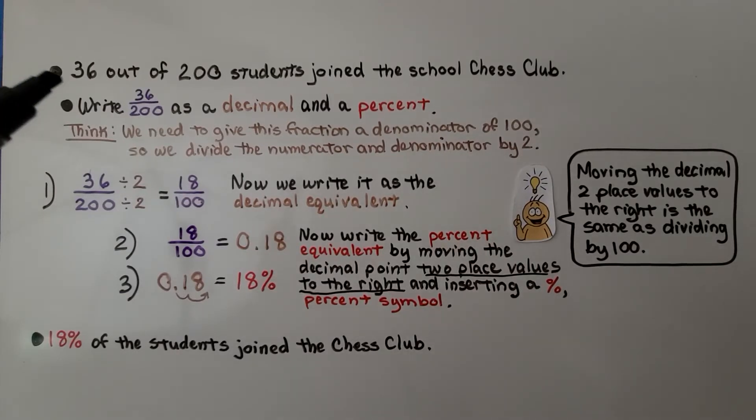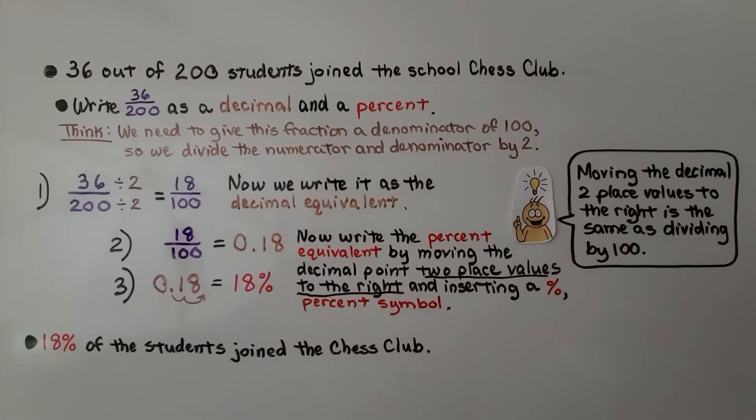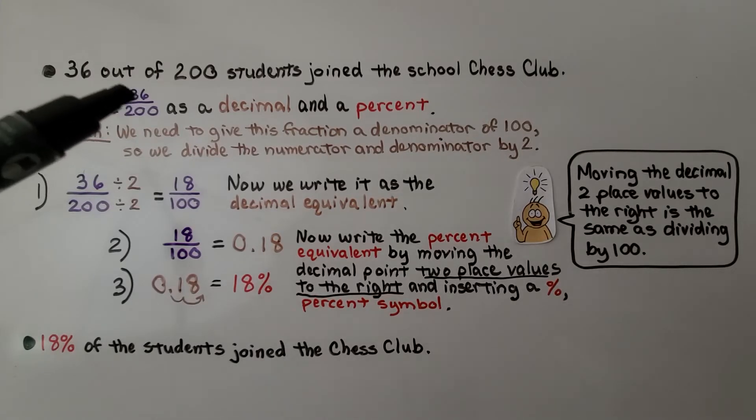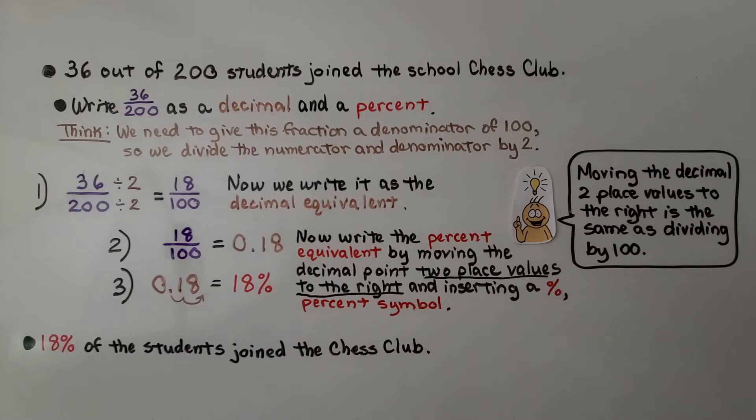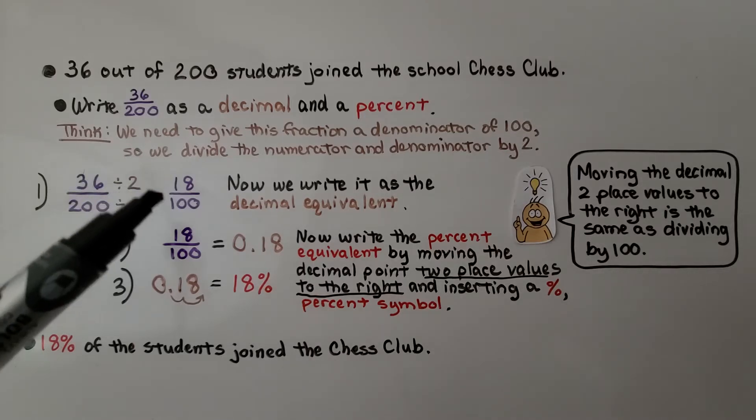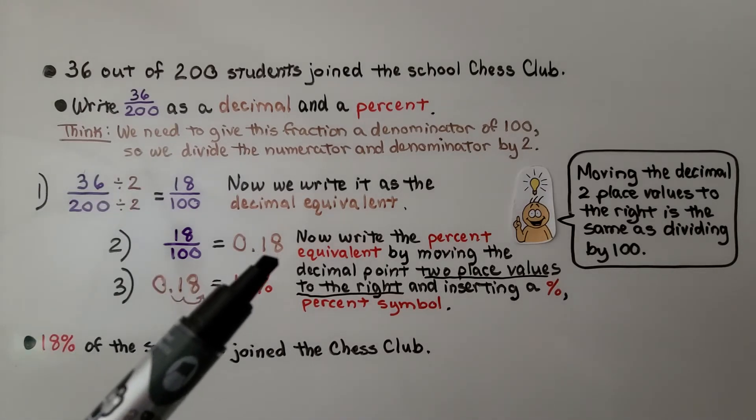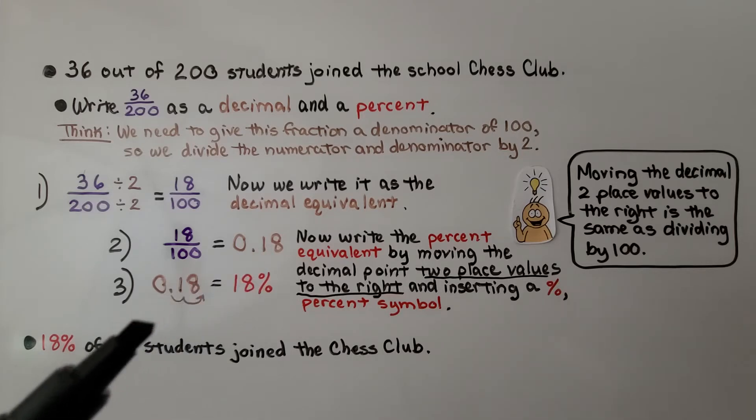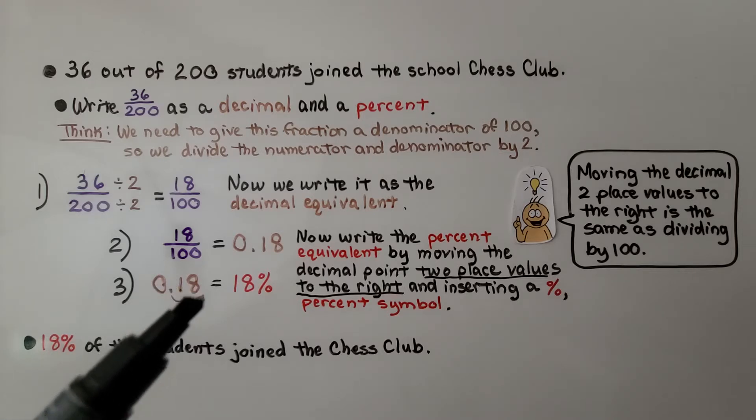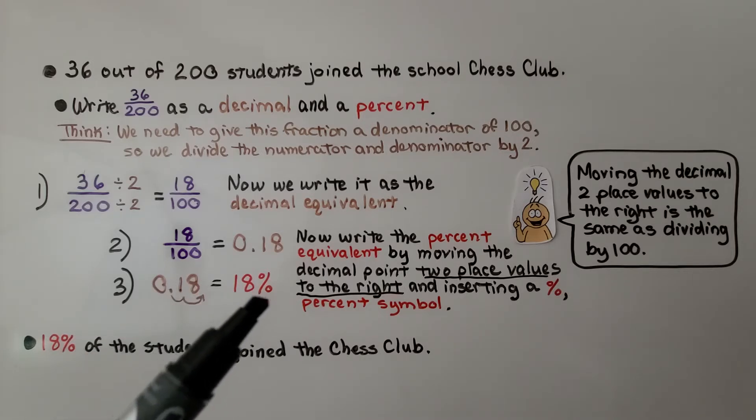36 out of 200 students joined the school chess club. We have 36 out of 200. We can write 36 two hundredths as a decimal and a percent. We need to give this fraction a denominator of 100, so we divide the numerator and denominator by 2. That gives us 18 hundredths. Now we write it as the decimal equivalent, 0.18. Now write the percent equivalent by moving the decimal point two place values to the right and inserting a percent symbol.